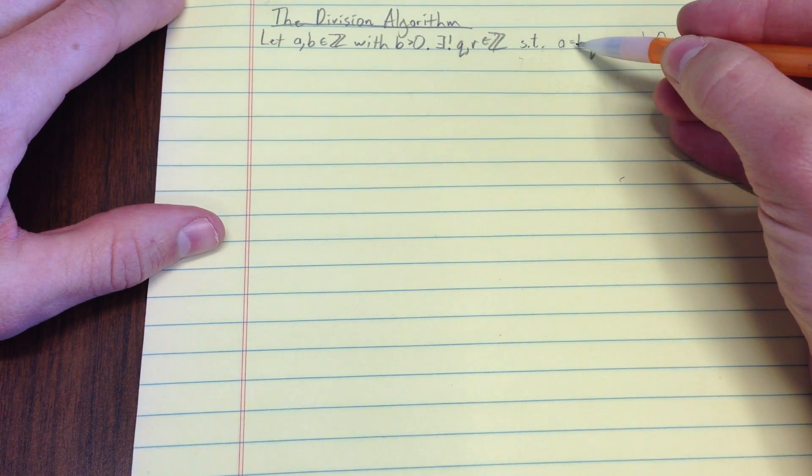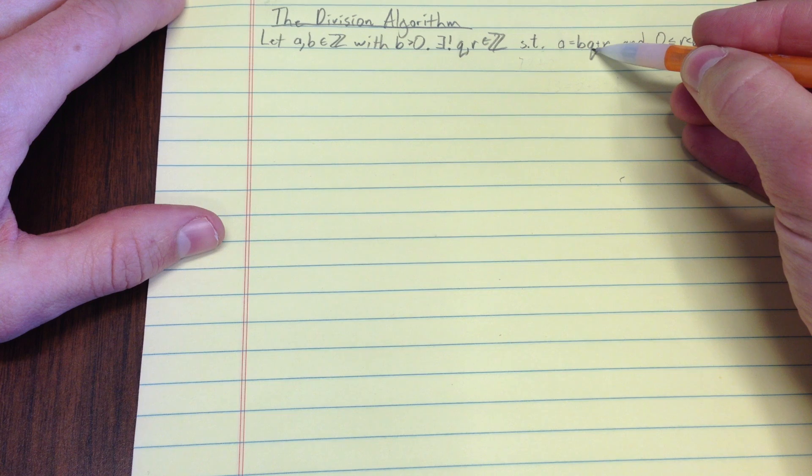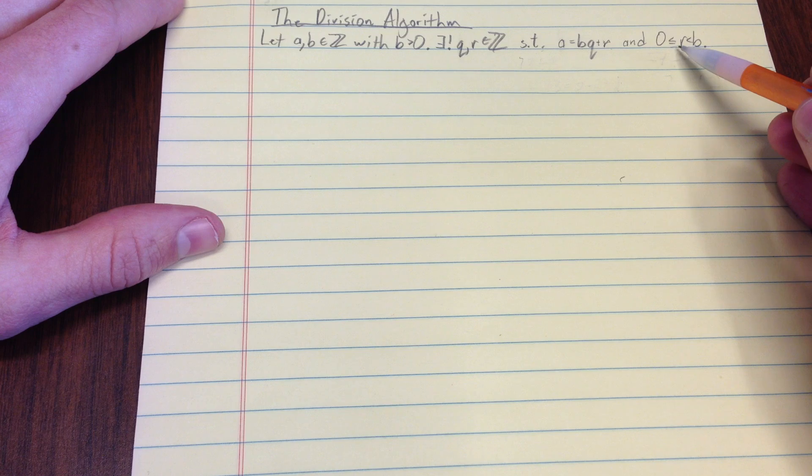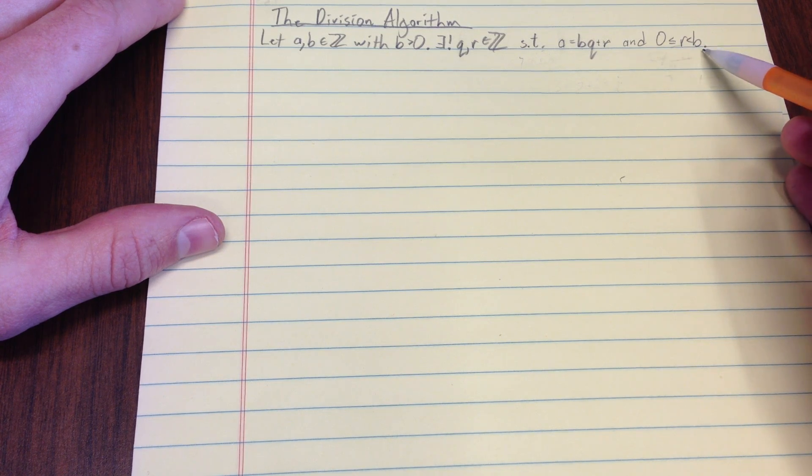Such that a equals b times q, we typically call it the quotient, plus r, which we typically call the remainder. And the remainder is greater than or equal to 0 but less than b.